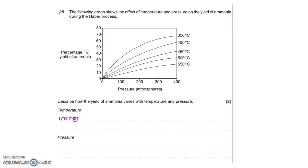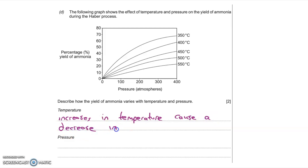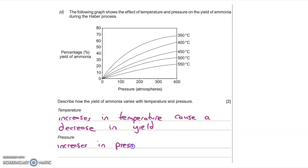In terms of temperature, increasing the temperature leads to a decrease in the yield of ammonia — one mark for stating that increases in temperature cause a decrease in the yield of ammonia. For pressure, increasing the pressure causes an increase in the percentage yield of ammonia — one mark for recognizing that increases in pressure lead to increases in the percentage yield of ammonia produced in the Haber process.